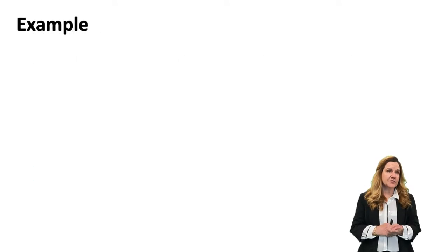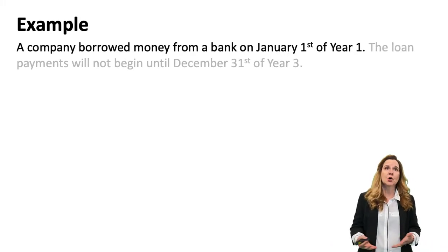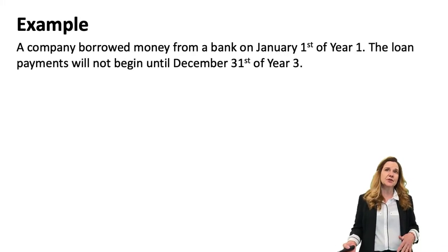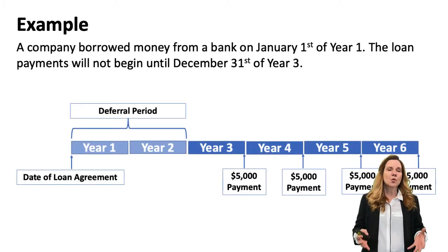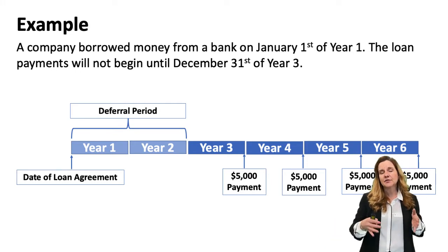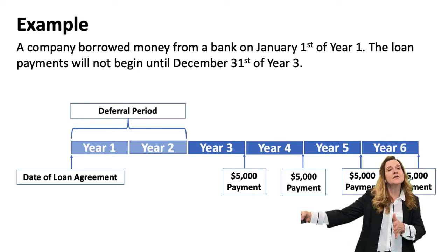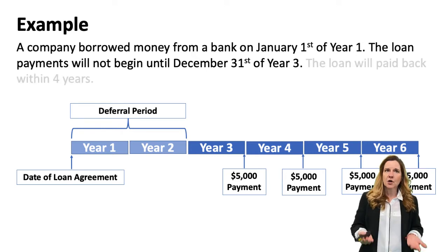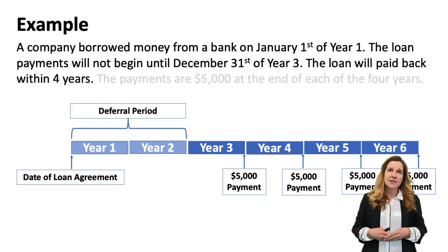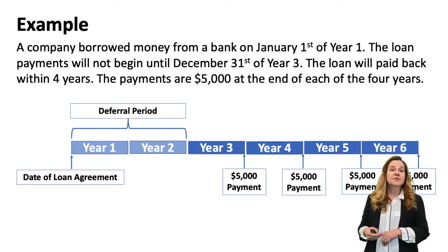An example of a deferred annuity: a company borrowed money from a bank on January 1st of year one. The loan payments will not begin until December 31st of year three. Now, the thing to remember about annuities is an ordinary annuity doesn't pay out until the end of that period. So period three is still part of the actual cycle, even though it's the end of period three. The loan will be paid back within four years and the payments are $5,000 at the end of each of the four years.